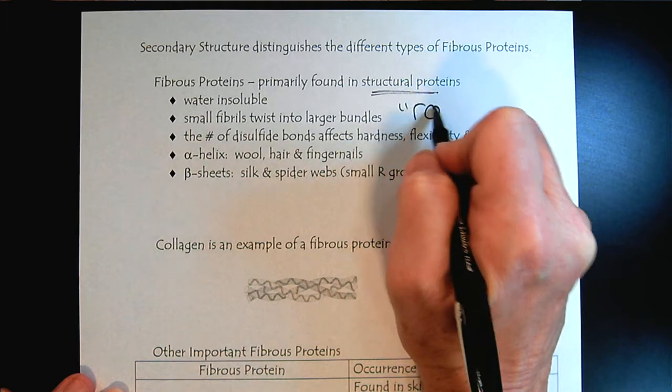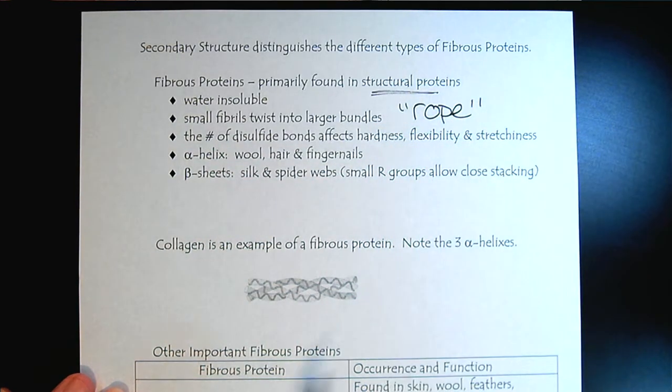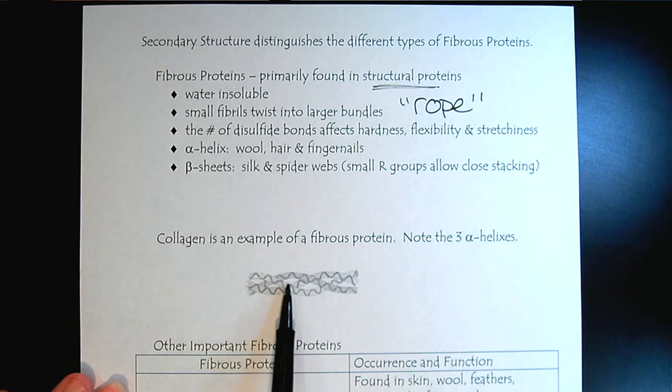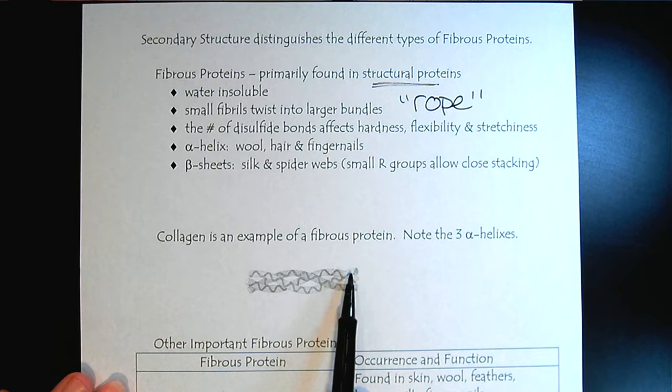They tend to be water-insoluble, and there's often small fibrils twist together into larger bundles. You could think of it, it's very similar to a rope. If we look at the structure down here, we can see an example. We can see that there are smaller fibrils that are then twisted into larger bundles, and we could see where that would give strength and support.